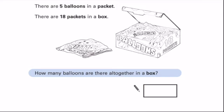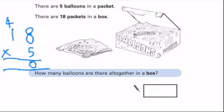Welcome back. A packet has 5 balloons, and there are 18 packets. So basically, we need to do 18 times 5. And that will tell us how many balloons there are, because if there are 18 packets and each one has 5, it's 18 times 5. So I'm going to do the column method. The answer to that question, there are 90 balloons in that big box.